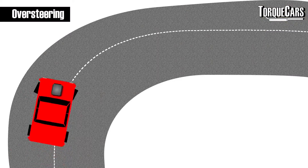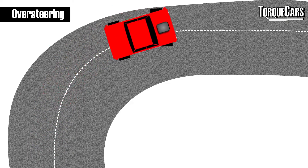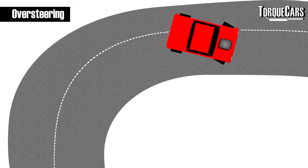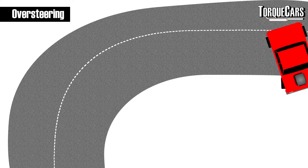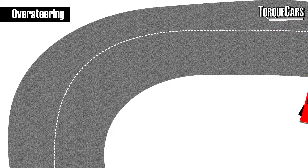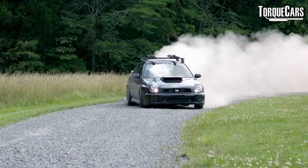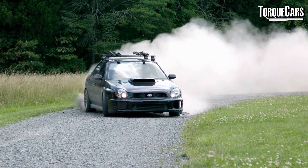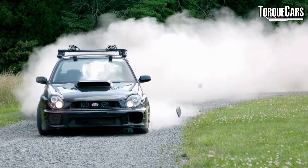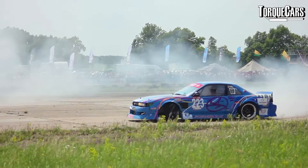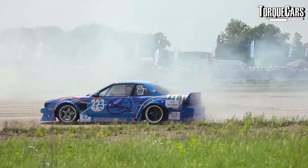Oversteer is what you see in the movies — that's where the back of the car goes wide, so the nose of the car on the corner turns in sharper than you would expect. You see it in movies and video games all the time; it looks really cool and drifters rely on it. But actually it's very, very hard to control.